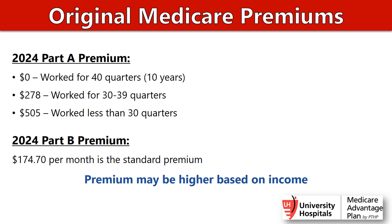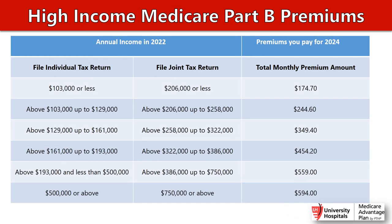Let's review some premiums for Medicare. For 2024, Part A: if you worked 40 quarters (10 years), you have a $0 monthly premium. If you worked 30 to 39 quarters, your Part A premium is $278 a month. If you worked less than 30 quarters, your Part A premium is $505. Everyone has to pay a Part B premium — the standard Part B premium in 2024 is $174.70, but premiums are based on your income, so a higher income means a higher premium.